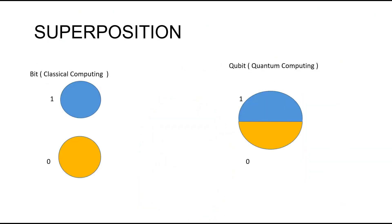Superposition refers to the quantum phenomenon where a quantum system can exist in multiple states or places at the exact same time.